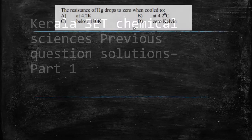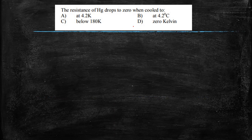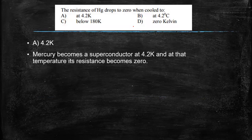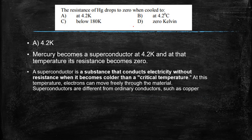The first question is: the resistance of mercury drops to zero when it is cooled to. We have to say at the temperature at which the resistance will be cooled to zero. The temperature is 4.2 Kelvin. The reason behind that is mercury becomes superconductor at 4.2 Kelvin, and at that temperature its resistance becomes zero.